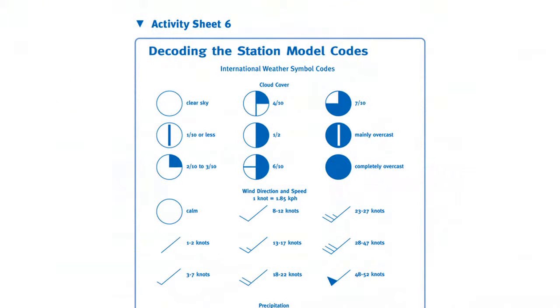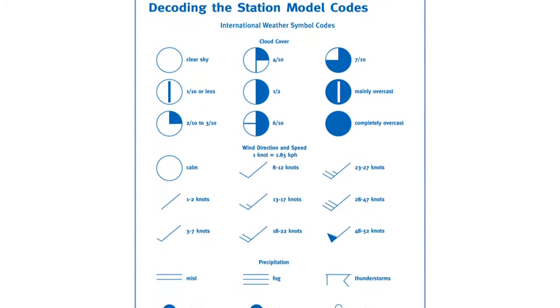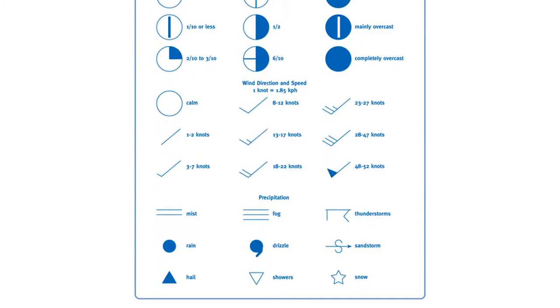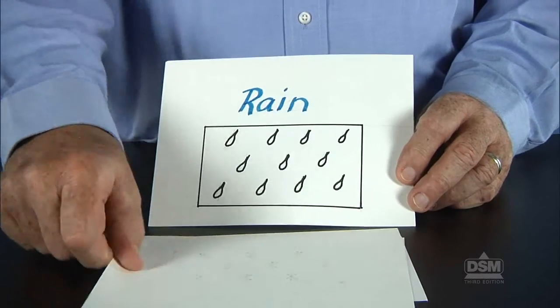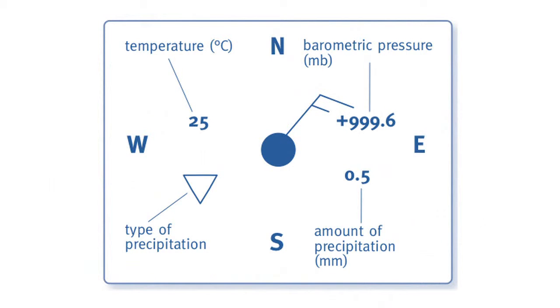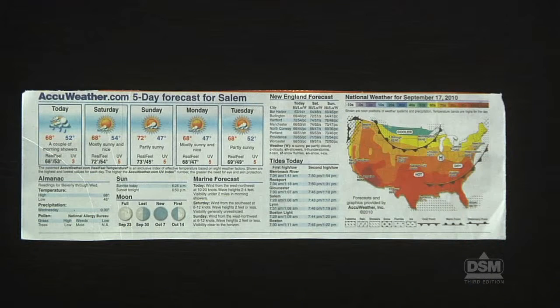You will also need to provide markers and weather reports. To prepare for the activity, make a copy of Activity Sheet 6 for each student and make several station model cards for use in this activity. Use weather reports from different days to gather the data for the cards. Refer to Figure 1-1 and Activity Sheet 6 for codes and their placement, and be sure to collect today's weather reports.